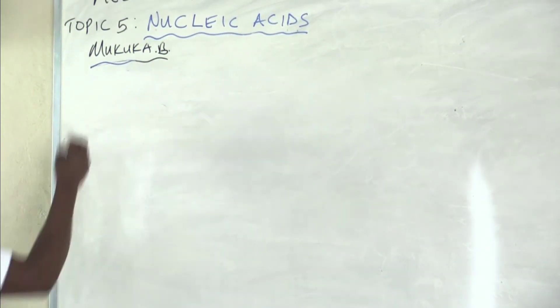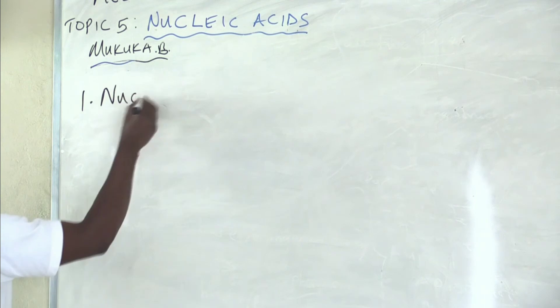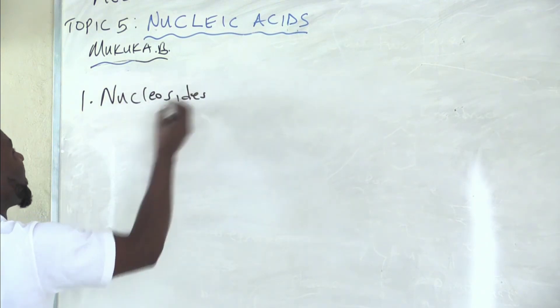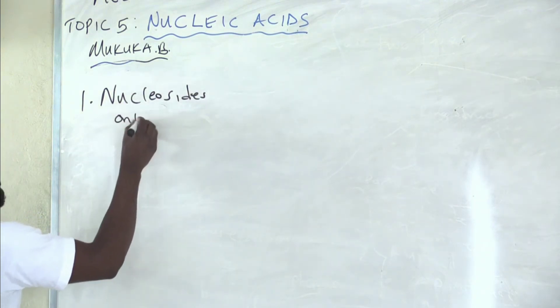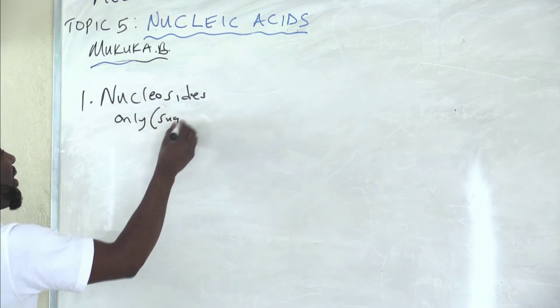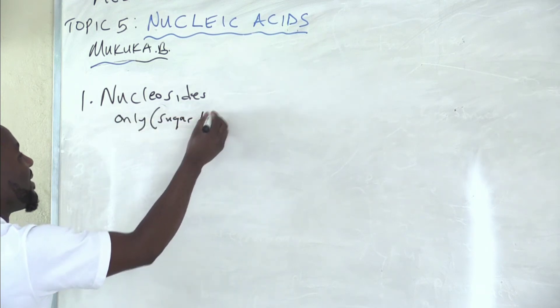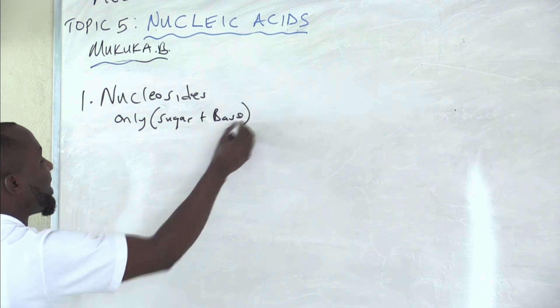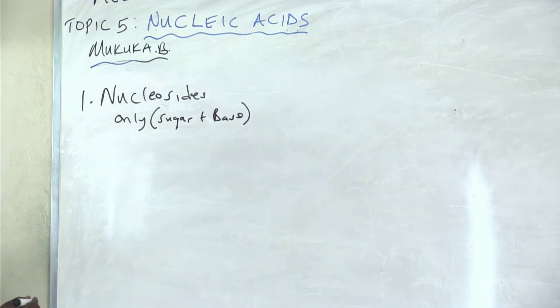So our first one is nucleosides. What did we say? It has only a sugar plus a base. There is no phosphate. What does it mean? Let us draw.